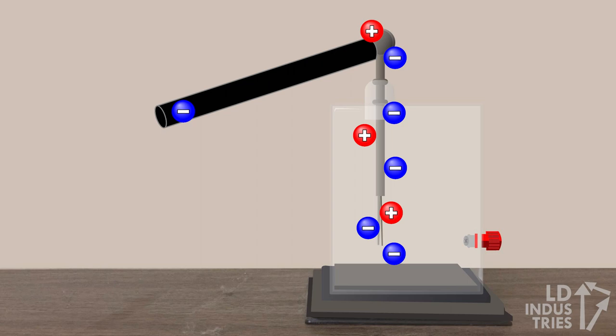Since the electroscope is made from metal, which is an electrical conductor, the electrons spread evenly throughout, including into the leaf of the electroscope, and the leaves repel due to the buildup of negative charge.